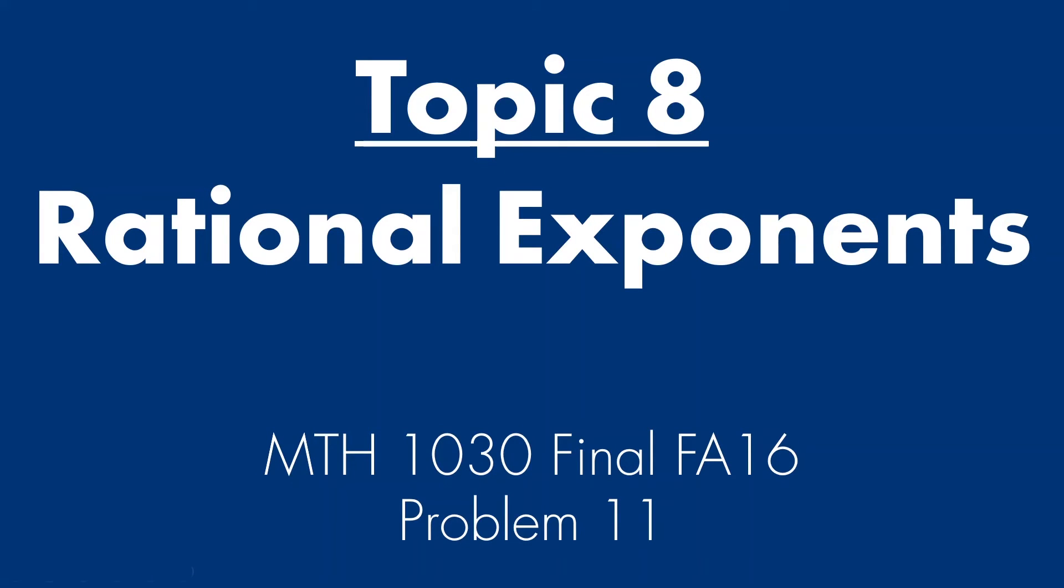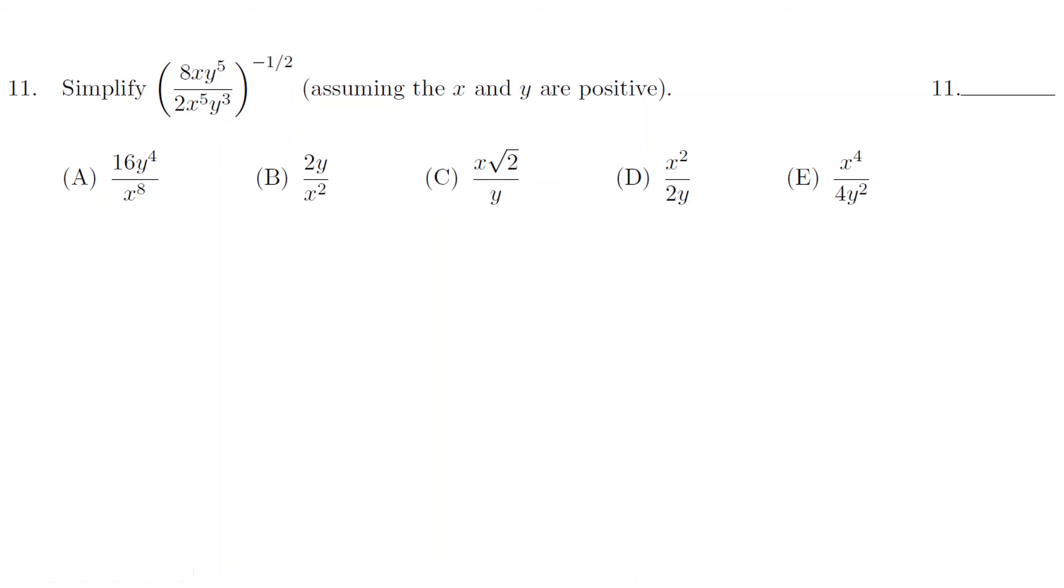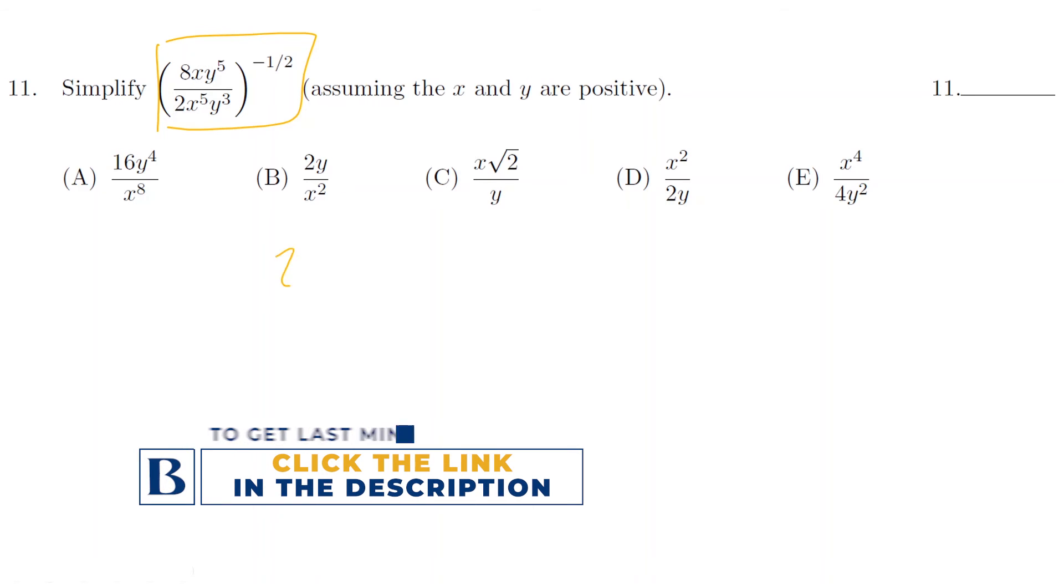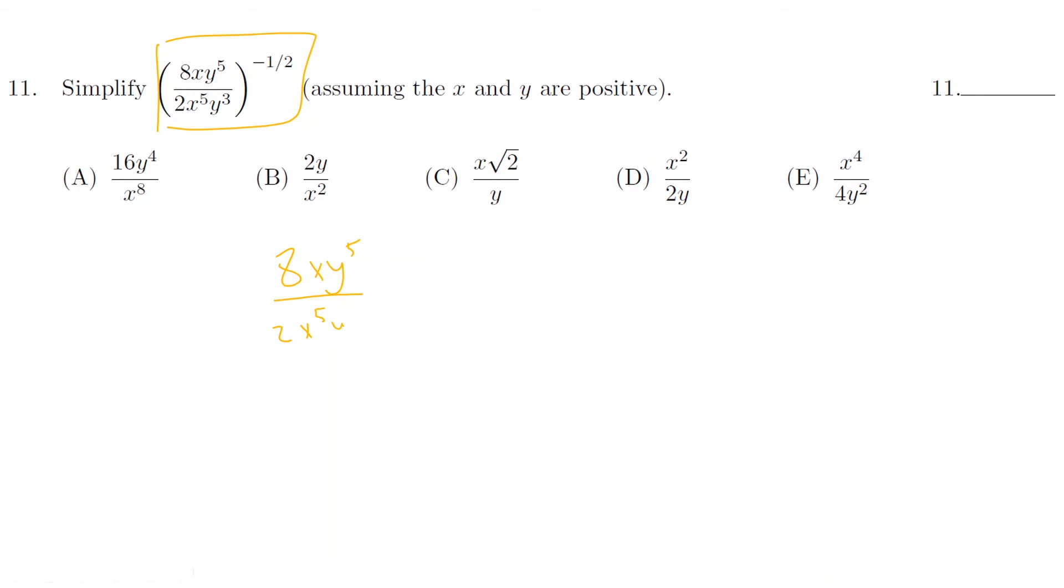Topic 8. Rational exponents. Problem 11 from the final FA16. This one looks very complex. But it only looks very complex if you look at this from the Gestalt standpoint, as I call it. Try to split this into steps. Let's just look at the inside first. We got 8xy to the 5 over 2x to the 5 y to the 3. So if we try to look at these guys first.